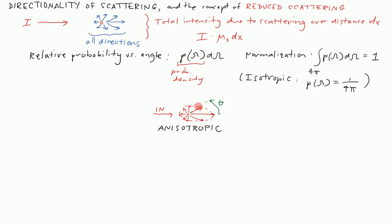What we mean by anisotropic is that the average value of the cosine of the scattering angle theta — note cosine of theta equals 1 for totally forward-directed light, negative 1 for totally backward-directed, and 0 for perpendicular directions — averaged over this distribution is greater than 0 because there's more forward-directed than backward-directed light. We name this quantity — the average value of cosine theta — and call it g.